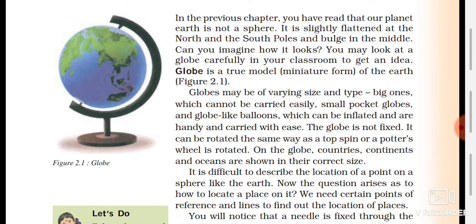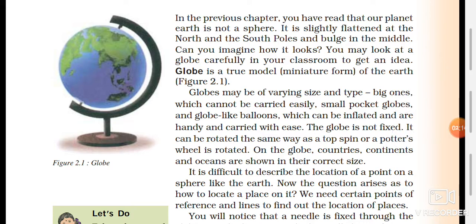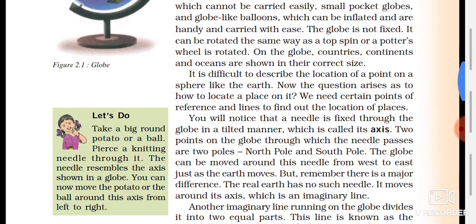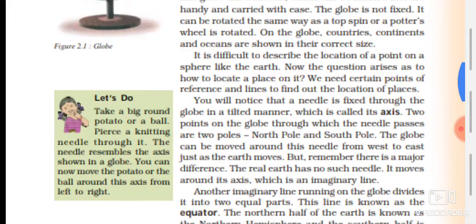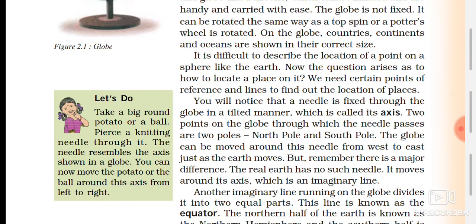On the globe, countries, continents, and oceans are shown in their correct size — we can see them in exact sizes. It is difficult to describe the location of a point on a sphere like the Earth.